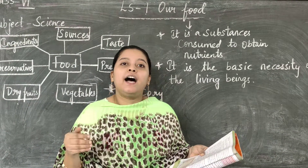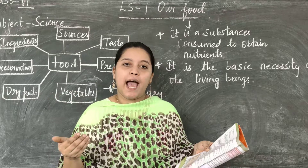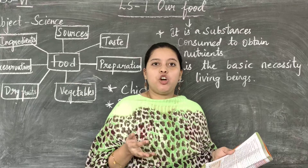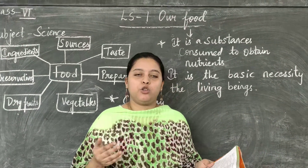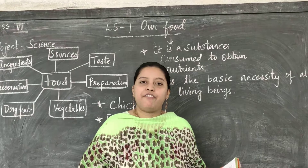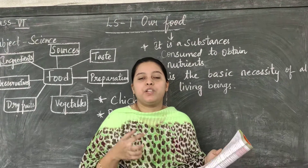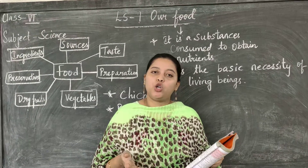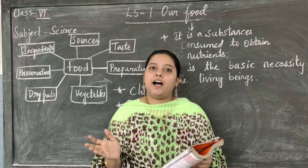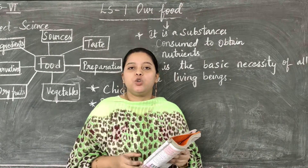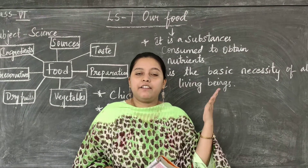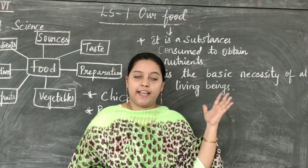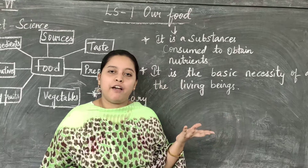Food habits depend on geographical and climatic conditions. In Telangana, we have rice — rice items are common. But in Rajasthan, people are famous for chapatis and rotis. People also have maize, bajra, and wheat depending on their region.